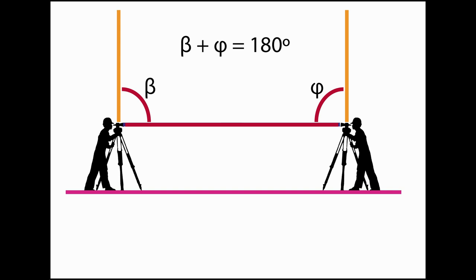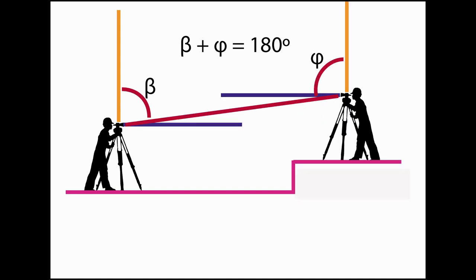On a flat Earth, when both observers are at the same elevation, both will measure an angle of 90 degrees. The sum of both angles will be 180 degrees. When the observers are at a different elevation, their line of sight will not coincide with the horizontal, and both measured angles will not be 90 degrees. However, the sum of the angles still will always be 180 degrees.